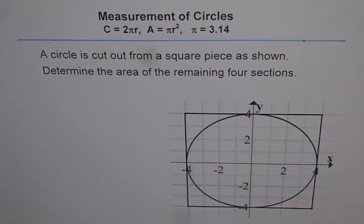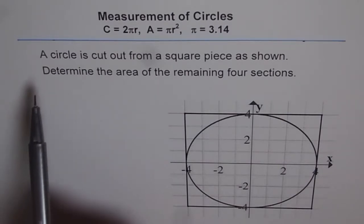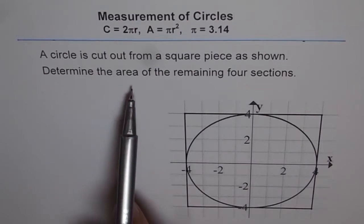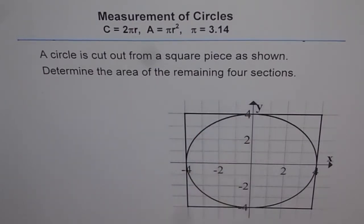So in this series of finding area of a section when you take away one shape from the other, here is another question. The question is a circle is cut out from a square piece as shown. So that is a square piece and from there we are taking out a circle. Determine the area of remaining four sections.